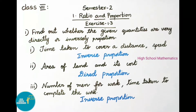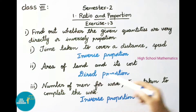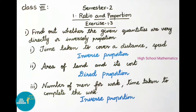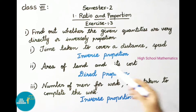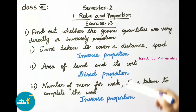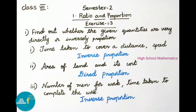Second one: area of land and its cost. Here both quantities increase in the same proportion or decrease in the same proportion. So the given quantities are in direct proportion.